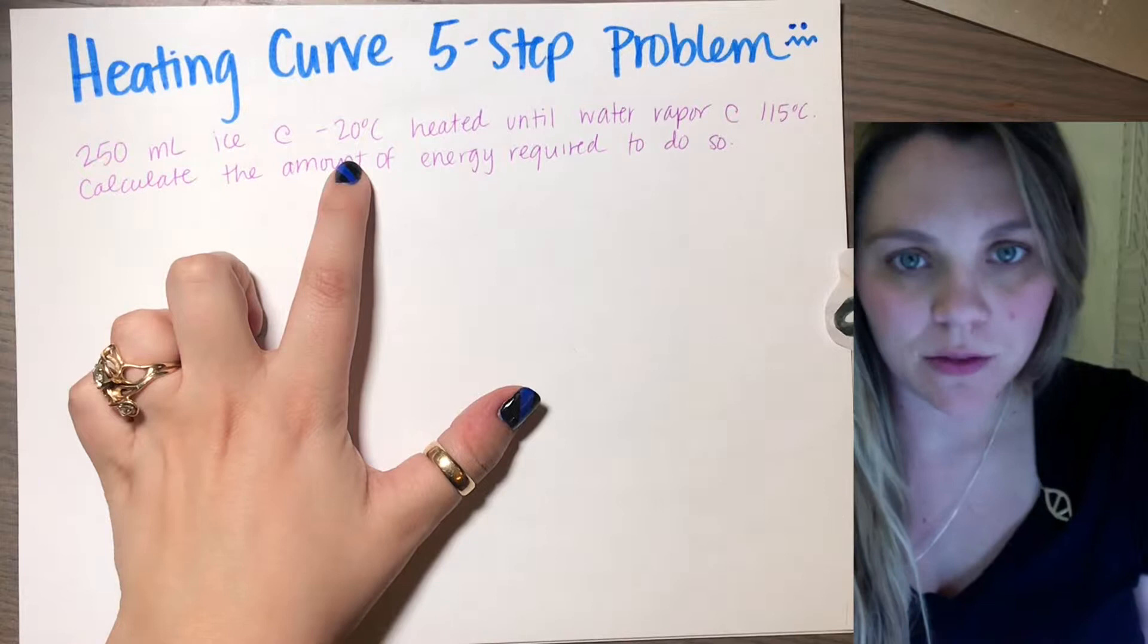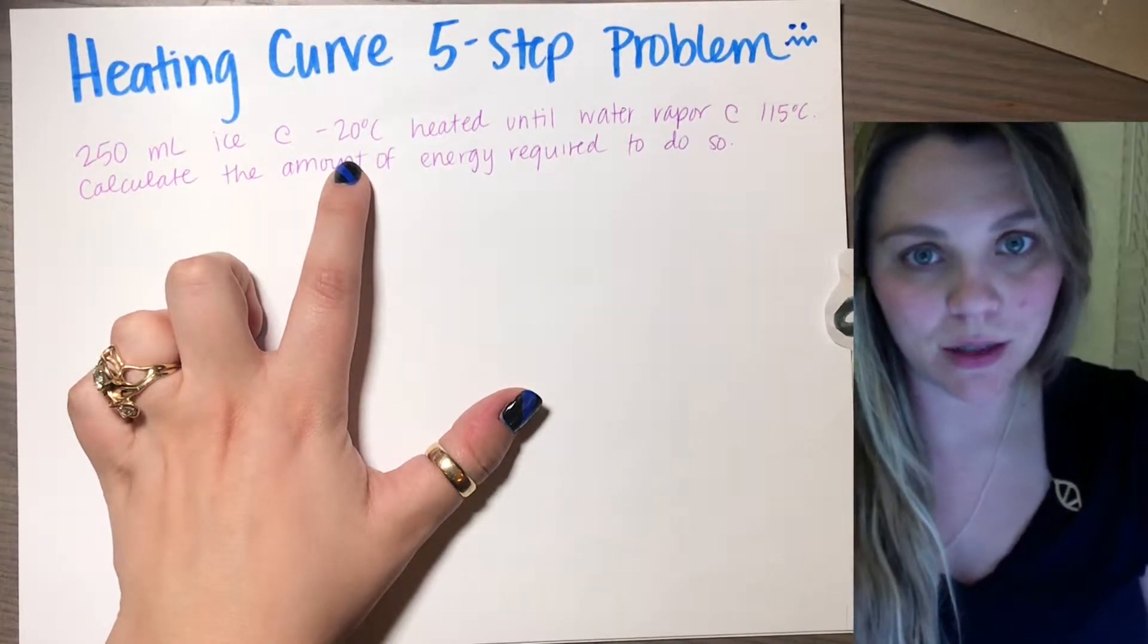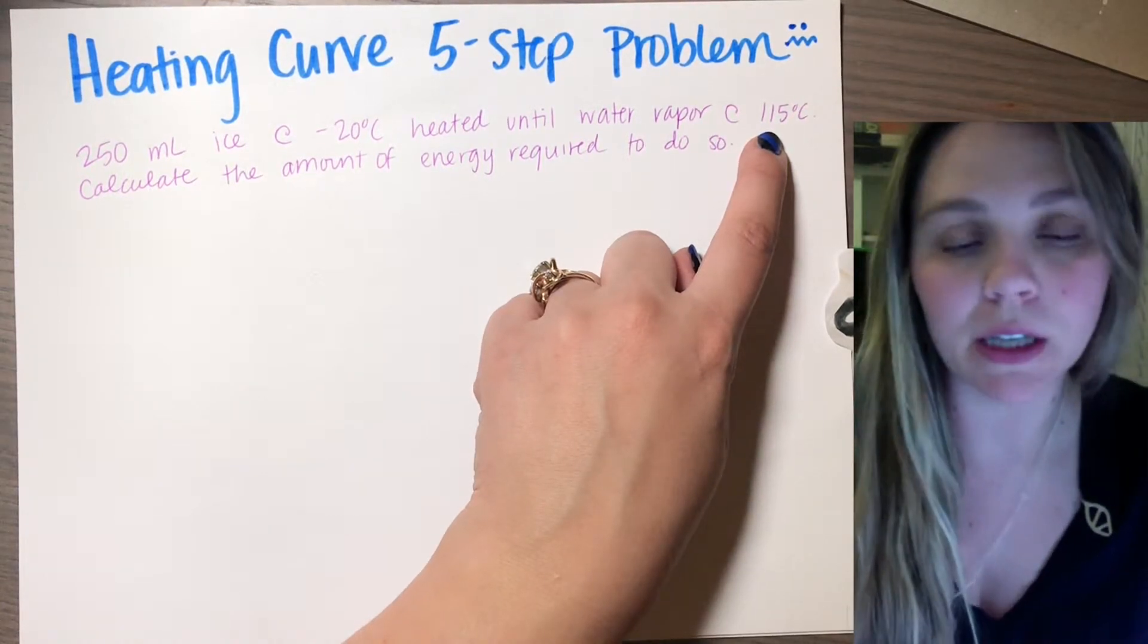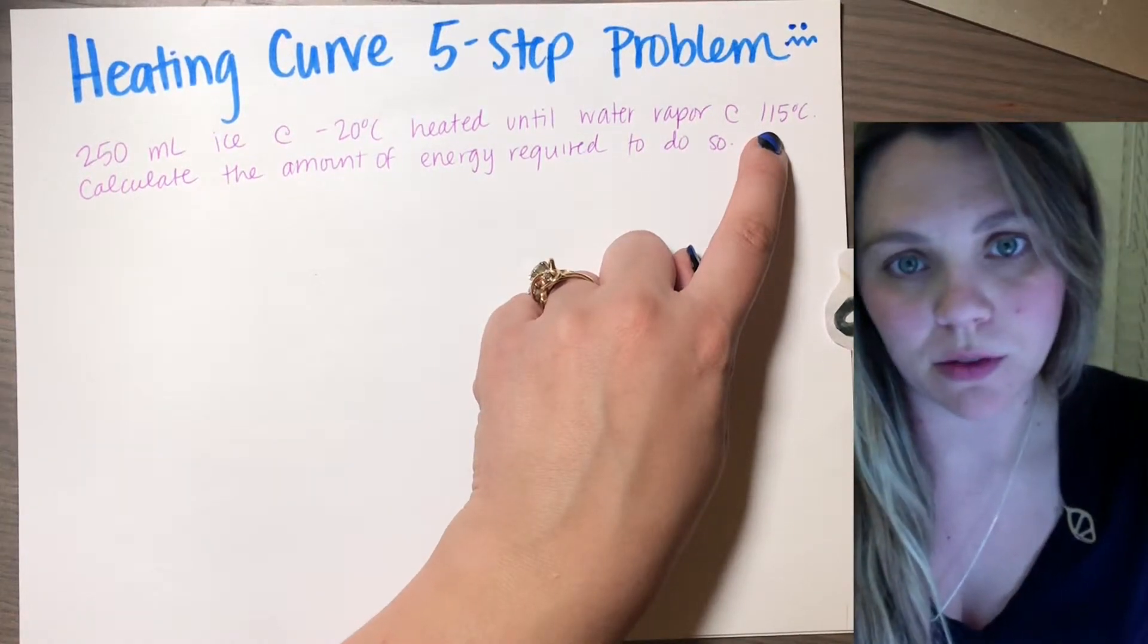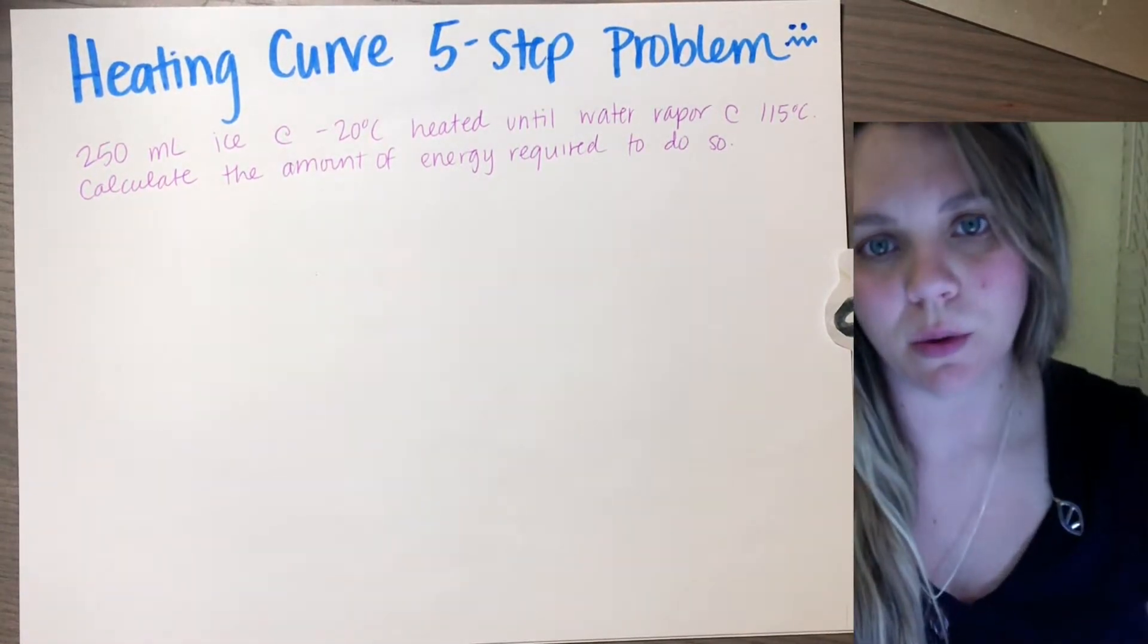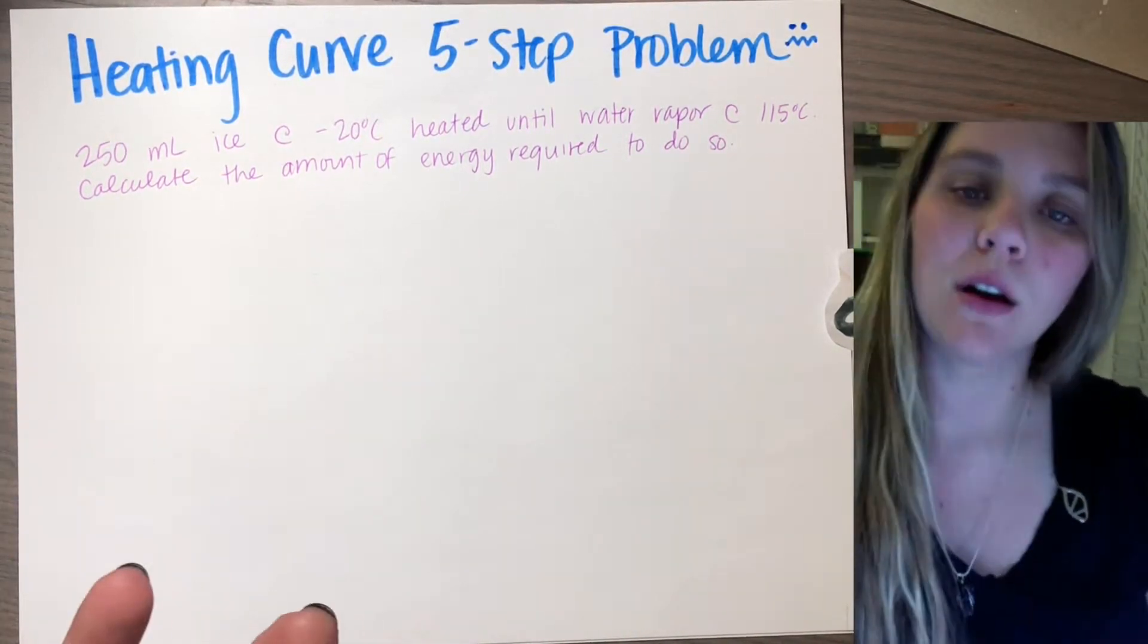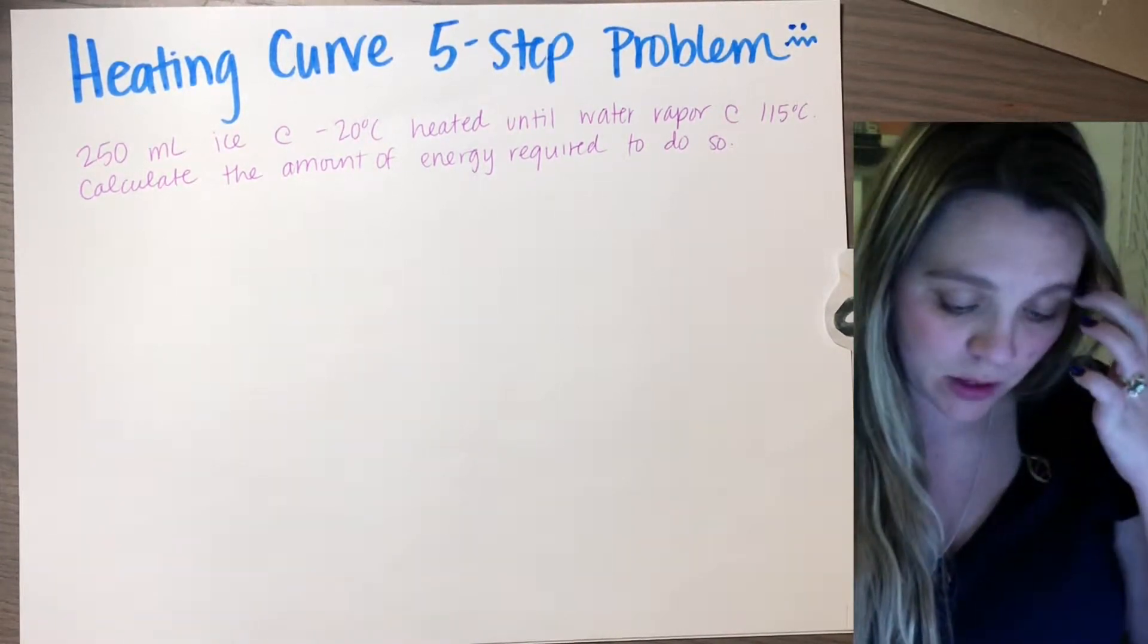You have 250 milliliters of ice that was in a freezer at negative 20 degrees Celsius. You take that ice out and put it into a pot on the stove and heat it up until it is water vapor at 115 degrees Celsius. Your job is to calculate the amount of energy required to heat up that ice all the way up to 115 degrees Celsius.